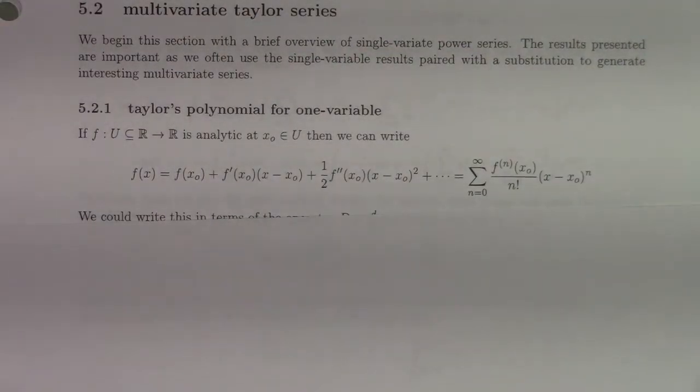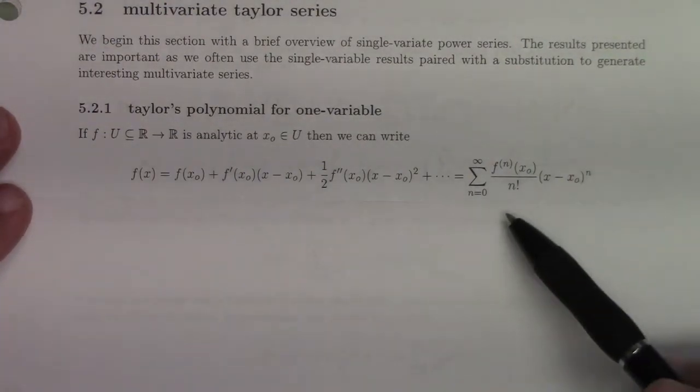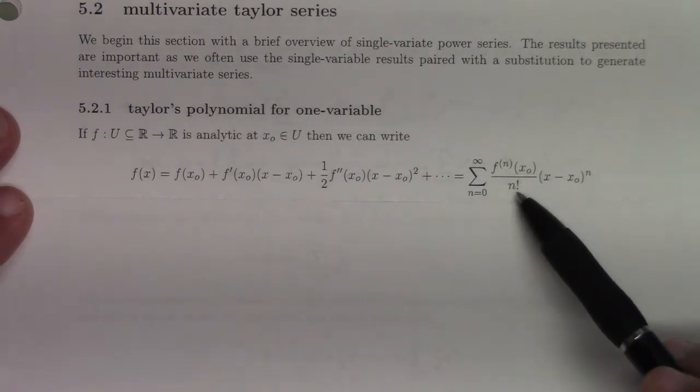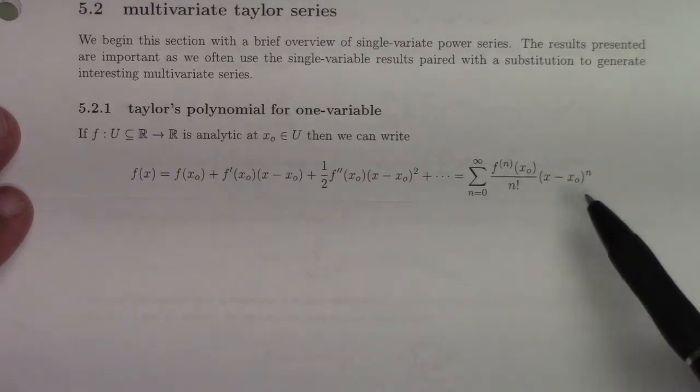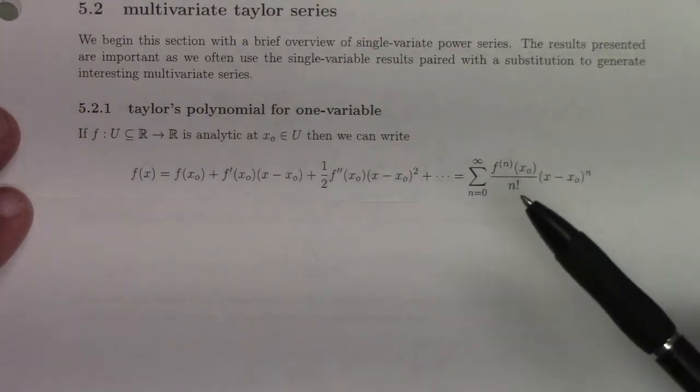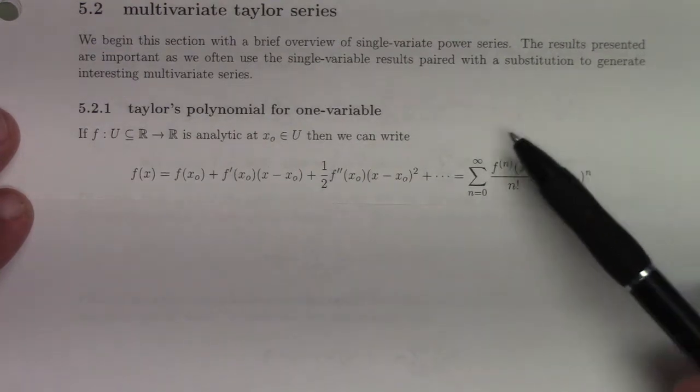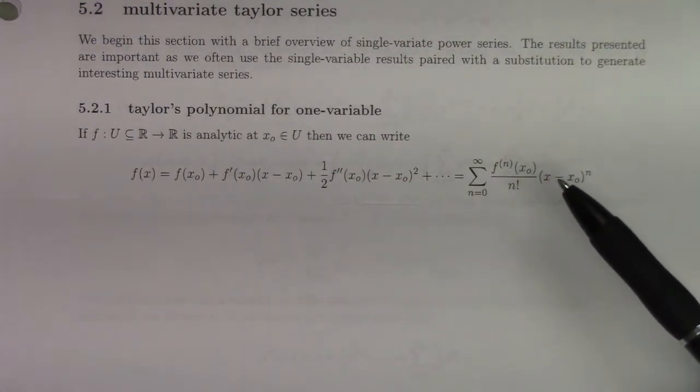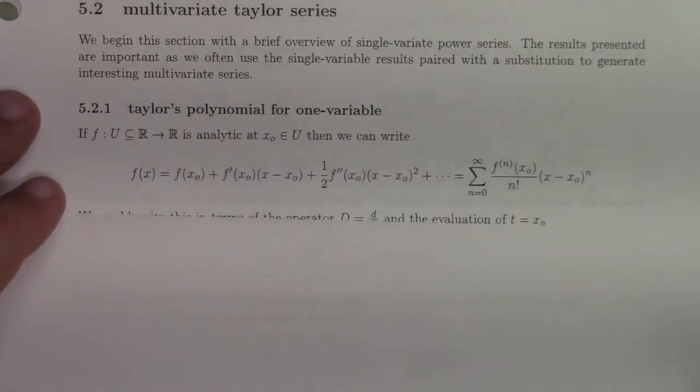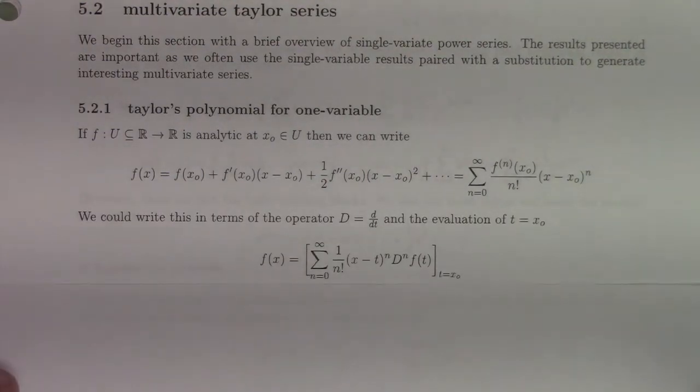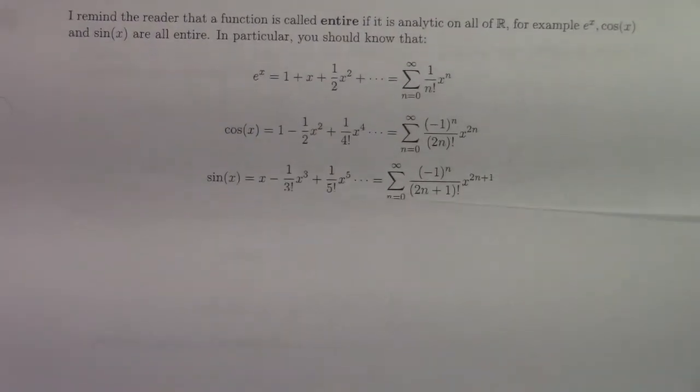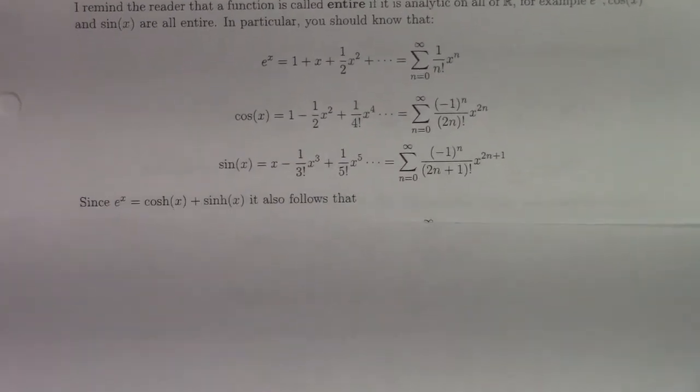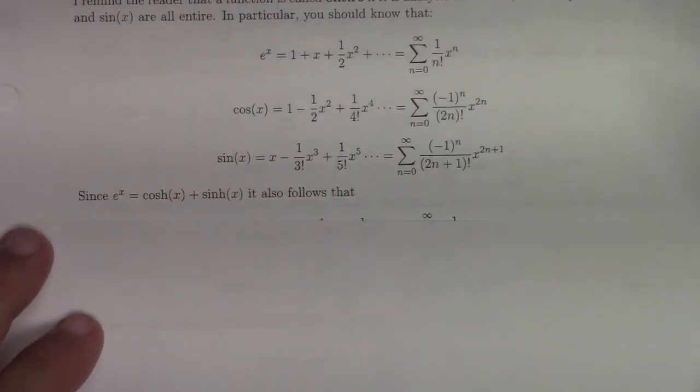But before I show you that, I need to do a quick review of some of the series that we know and love from calculus, power series rather. I should just remind you what Taylor's theorem looks like for one variable. It's the sum n equals zero to infinity of the nth derivative divided by n factorial, evaluated at the point of the expansion, and then times x minus x naught to the n.